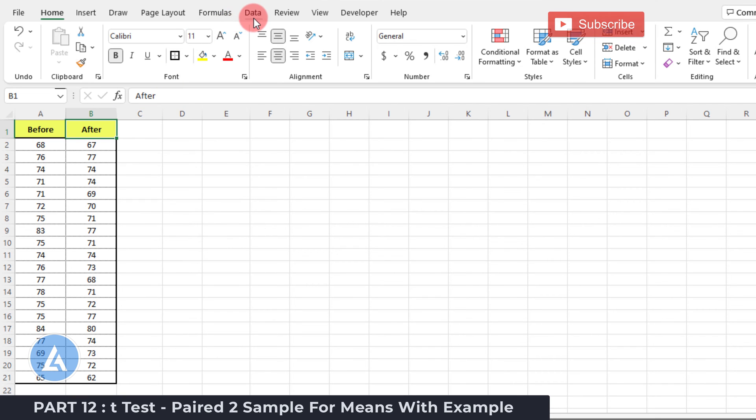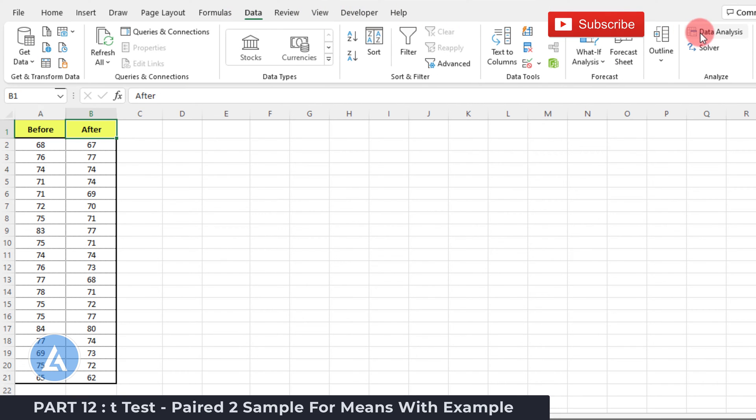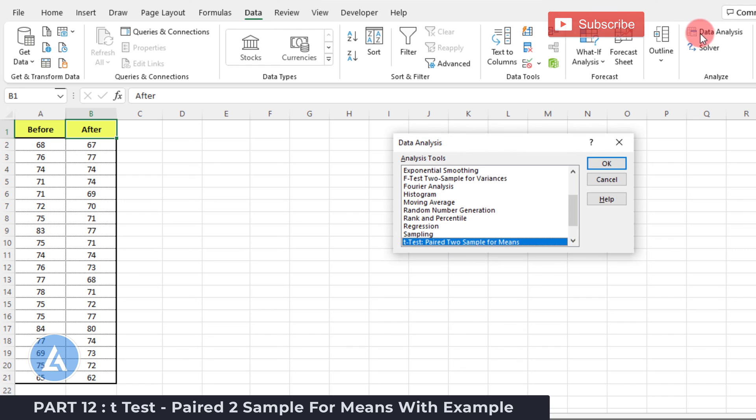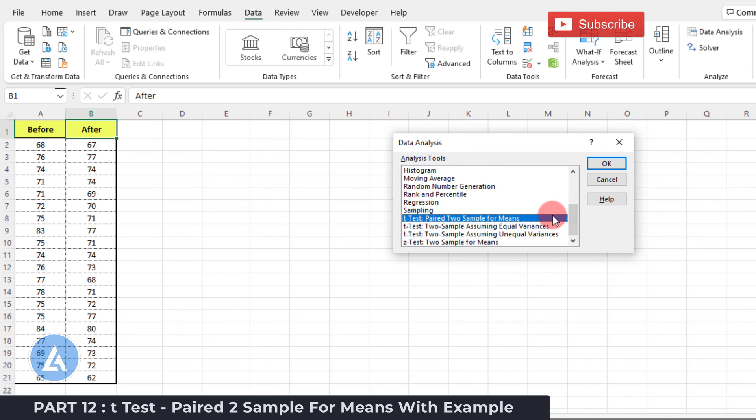Go to the Data tab. In that we need to select this Data Analysis tab. Now the Data Analysis window will be open. Here please scroll down and select the option for T-Test.